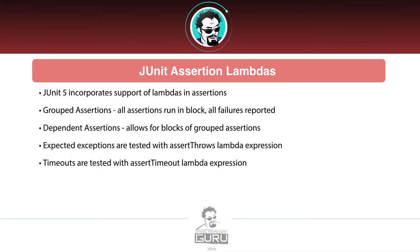JUnit 5 incorporates support for lambdas in assertions, and it does it quite nicely — we'll get into a number of examples of that. With grouped assertions, you can provide a block of assertions and say that these must all run, and if any of them fail, then fail.